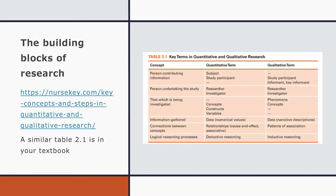Let's walk through some of these items. You have concepts in both quantitative and qualitative research. For example, the person creating the study information in quantitative research is usually referred to as the subject or the study participant, whereas in qualitative research they can be called the study participant, but they're also called informants or key informants. The person undertaking the study is the research investigator in both. That which is being investigated in quantitative research is concepts, constructs, and variables, and in qualitative it's phenomena and concepts. The information gathered is data — usually numerical values for quantitative, and usually narrative descriptions for qualitative.